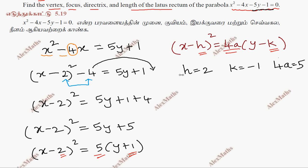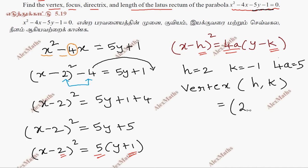Now, in the equation, the vertex is at (h, k). Therefore, the vertex is (2, minus 1). So the first part — the vertex — is found.